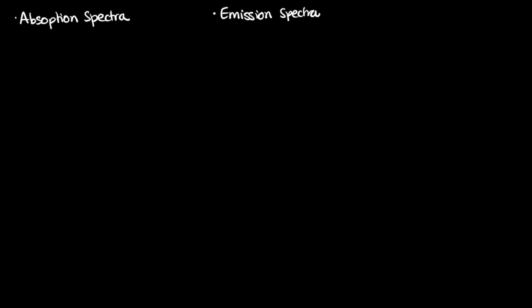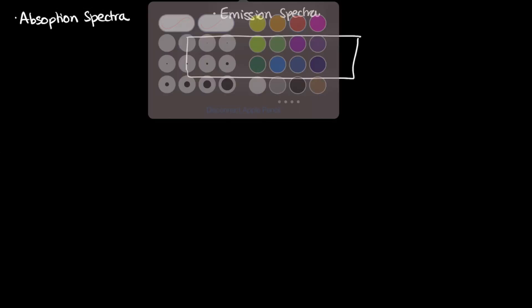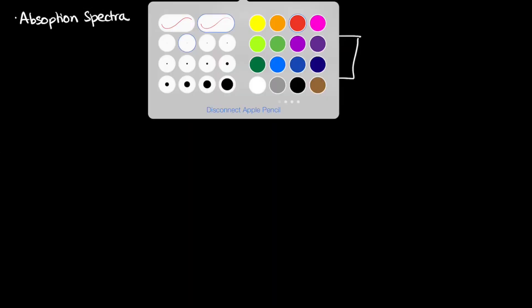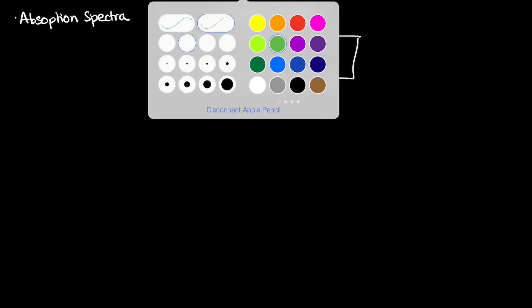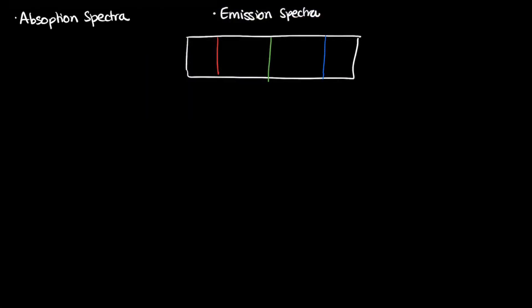Now emission spectra is basically what we've just seen. It's a spectrum which is only showing the colors which are equal to the energy differences between the two energy levels. So this is what we've seen, basically.